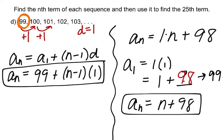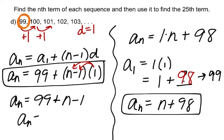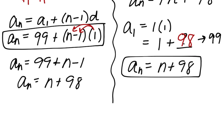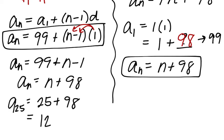Going back to the formula side and distributing, n minus 1 times 1 is n minus 1. So a sub n equals 99 plus n minus 1, which is indeed n plus 98. To find the 25th term, a sub 25, substitute 25 for n, giving us 123. The 25th term of the sequence is 123.